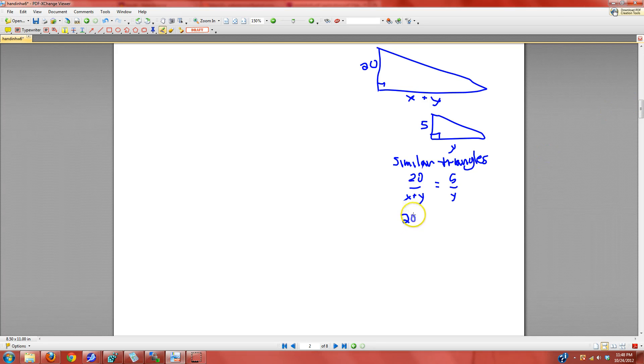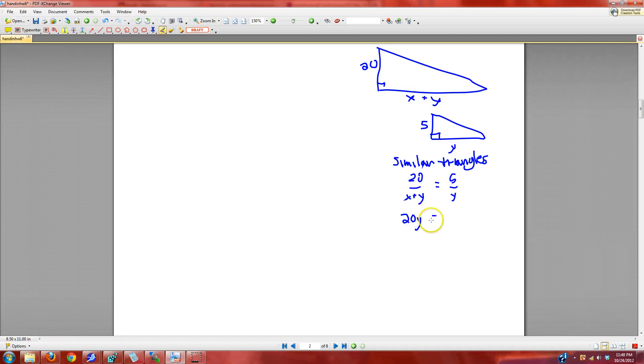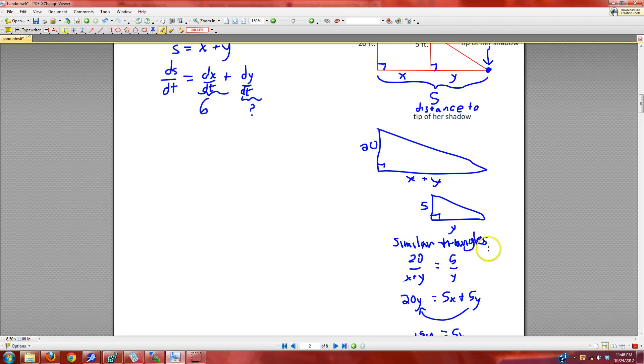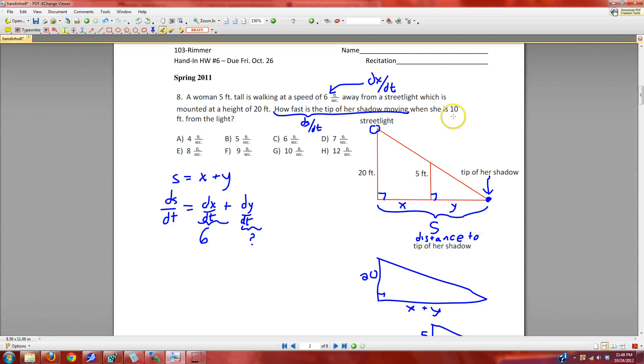This says 20Y is 5X plus 5Y. So, subtracted over 15Y is 5X or that Y is 1 third of X. Regardless of how far she is from the light, this 10 has nothing to do with the problem.